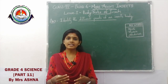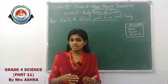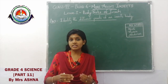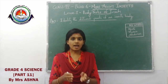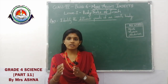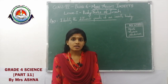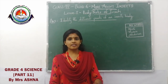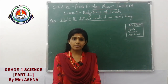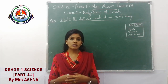In the previous block we learned about vertebrates and invertebrates. Animals with a backbone are called vertebrates. Animals without a backbone are called invertebrates. Examples of invertebrates include cockroach, earthworm, and spider. These animals do not have a backbone. In this block we are discussing about insects.